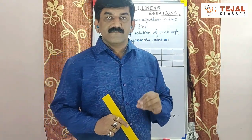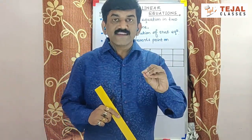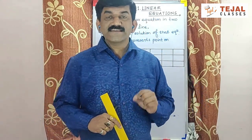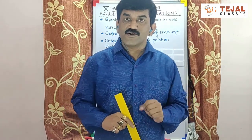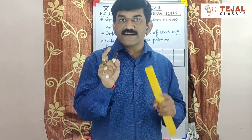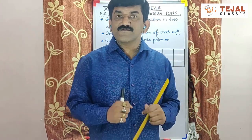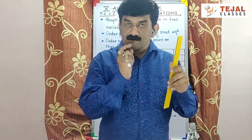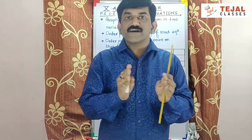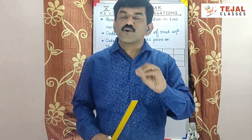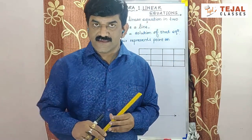Line draw करने के लिए, हमारे पास two variables linear equation available है. Line draw करने के लिए सबसे पहले हमें points की जरूरत है. Those points are called as order pairs. Order pairs किसे कहते हैं, जिसमें x-coordinate और y-coordinate साथ में आते हैं. x-coordinate means horizontal distance, y-coordinate means vertical distance. अगर हमारे पास point-wise मिलते हैं, तो कोई भी 3 points plot करो, तो उनसे एक line pass होती है.